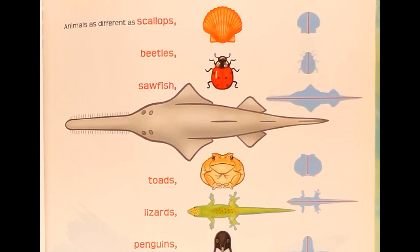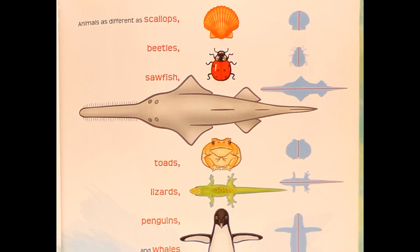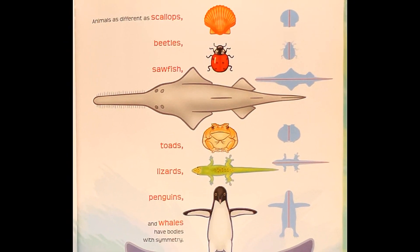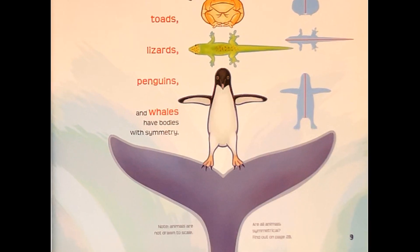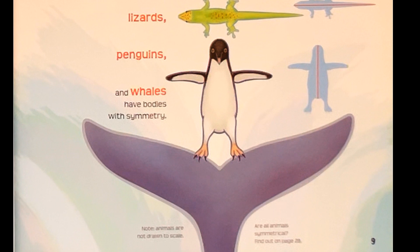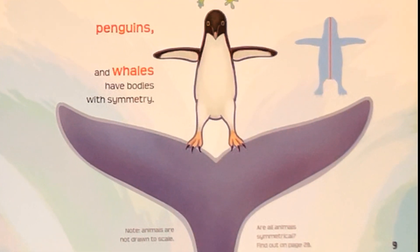Animals as different as scallops, beetles, sawfish, toads, lizards, penguins, and whales have bodies with symmetry. Note, animals are not drawn to scale. Are all animals symmetrical? Find out on page 28.